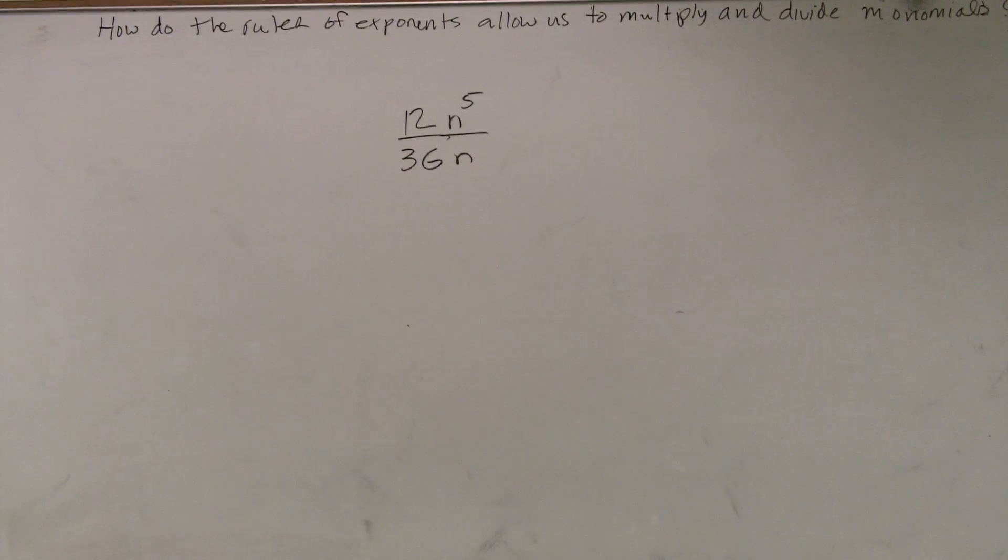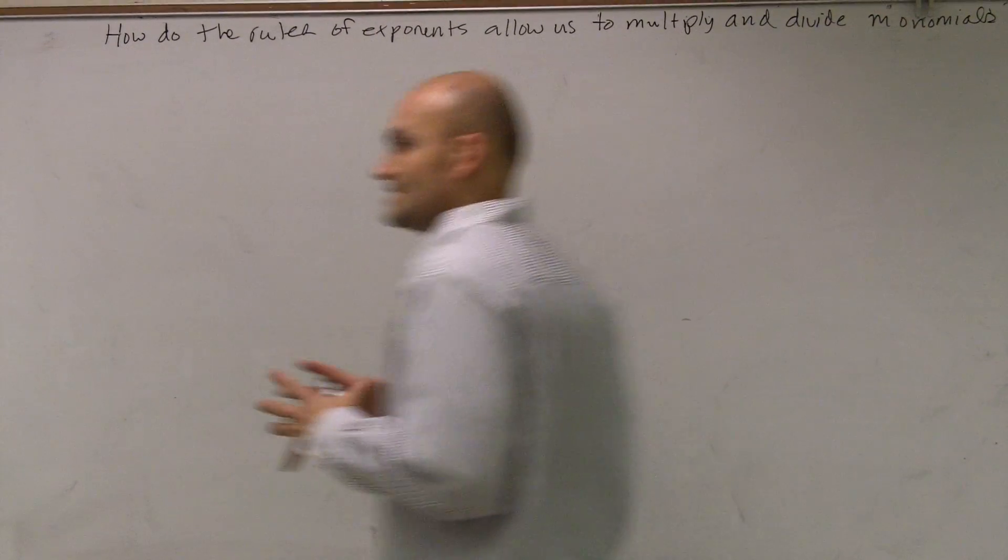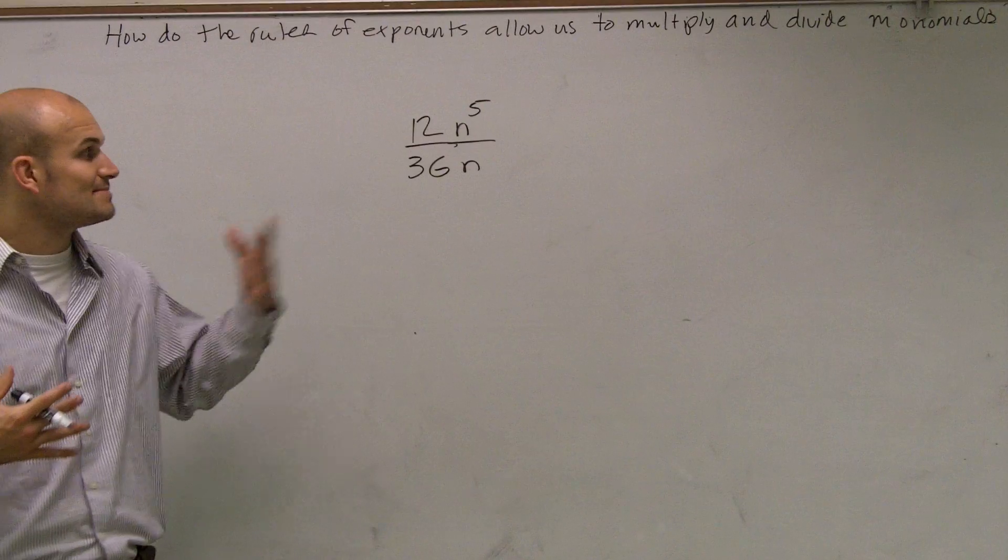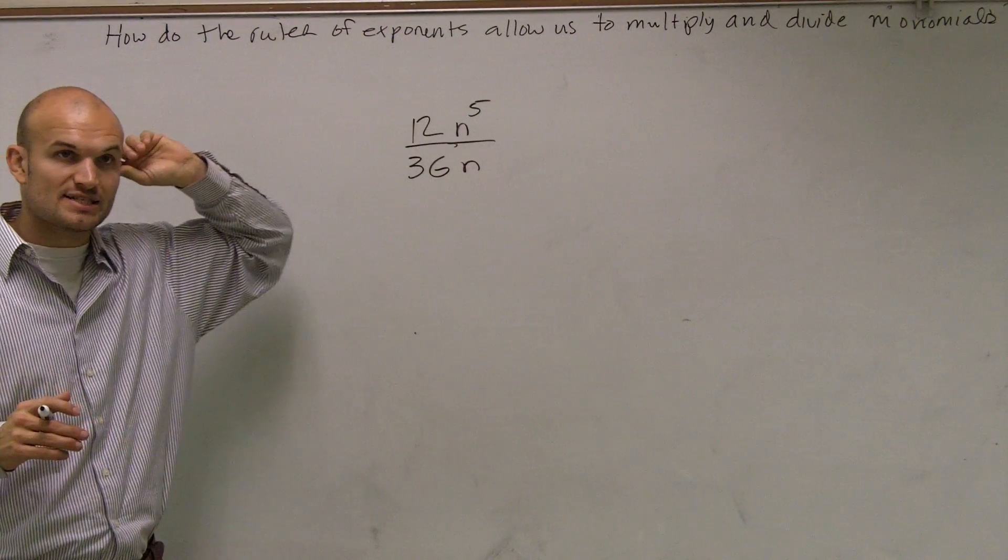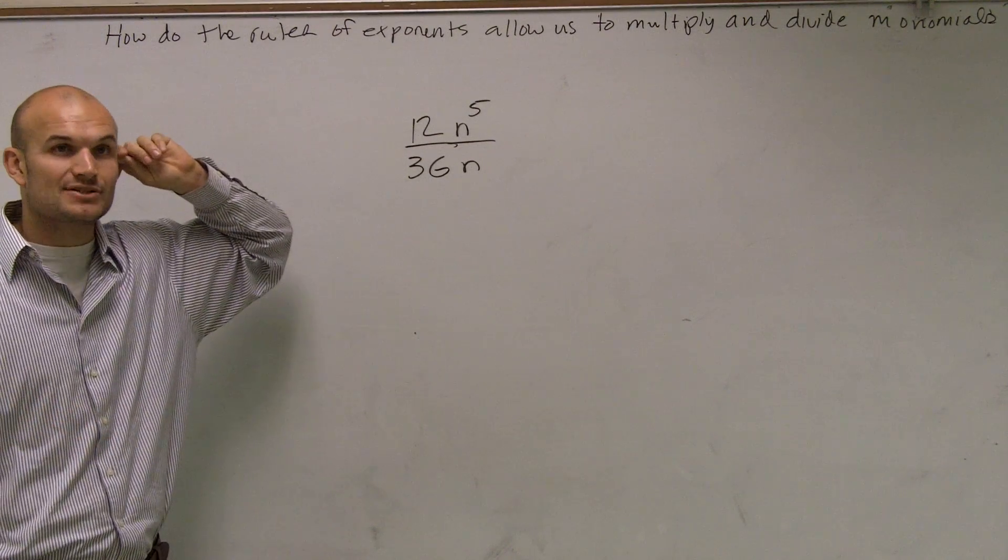Which will help us get the rest of them done, right? So ladies and gentlemen, it's asking us to solve. And we have this monomial here. We have 12 n to the fifth divided by 36 n, just n to the first.